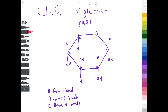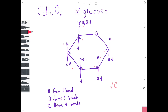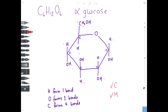It's important to double check what we've drawn by counting up all those atoms. Counting the carbons — one through six — yes, carbons are happy. Counting the hydrogens — one through twelve — yes, hydrogens are happy. And lastly counting the oxygens — one through six — yes, the oxygens are happy. We've confirmed C6H12O6.